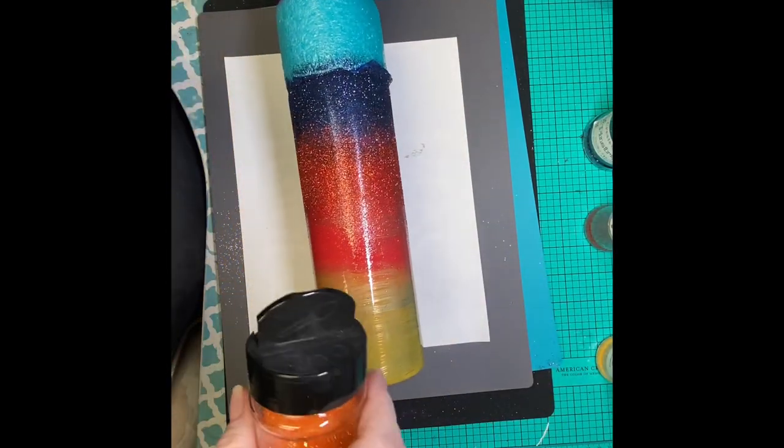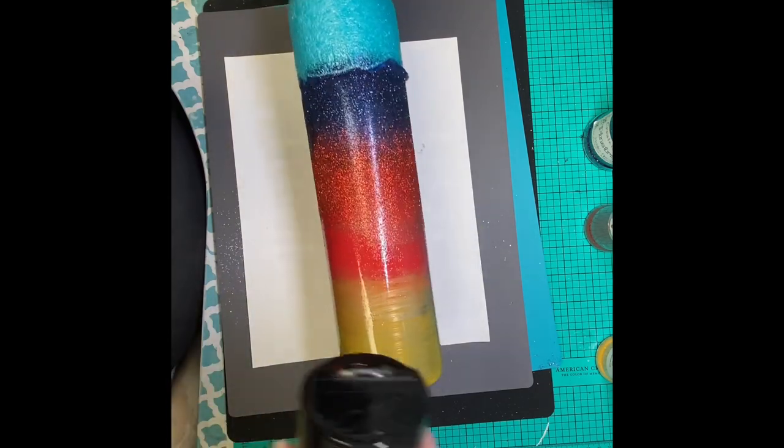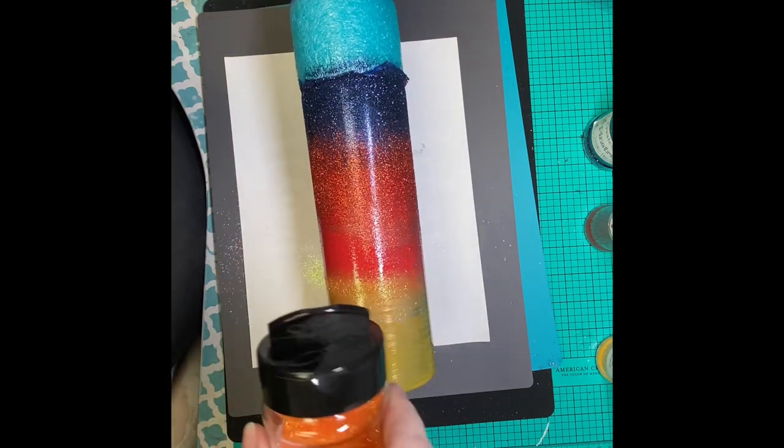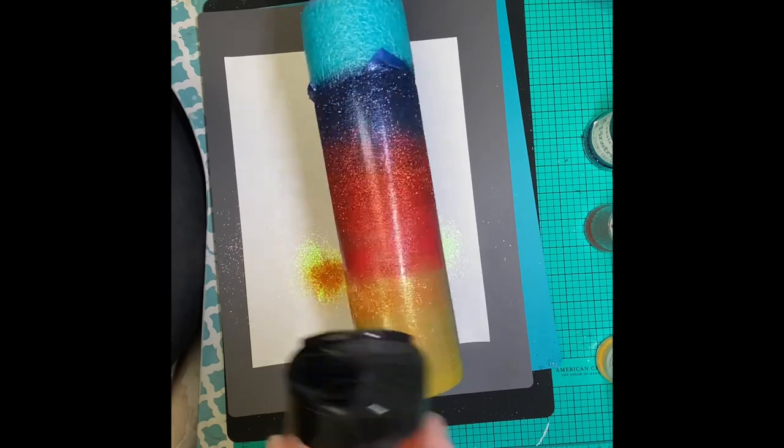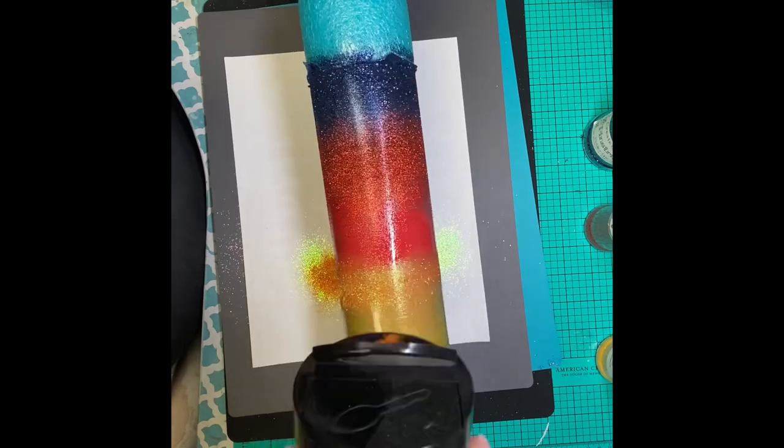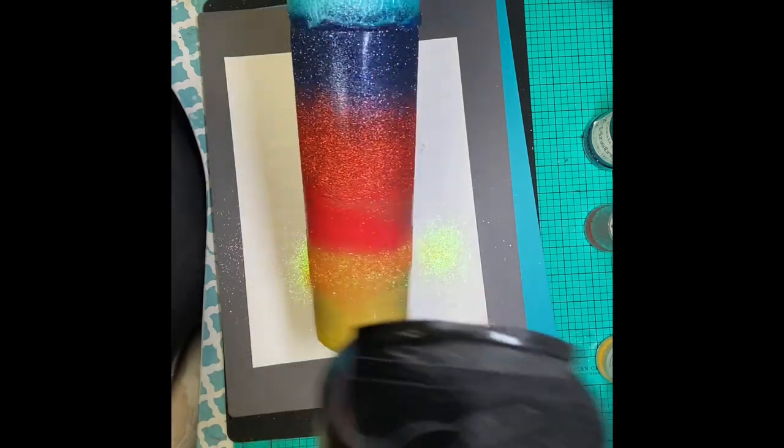This next one is West Texas Glitter Pumpkin Pie, and I'm going to do the same. I'm going to aim for where that yellow and orange come together, and then I'll tilt one way and sprinkle and tilt the other way and sprinkle.